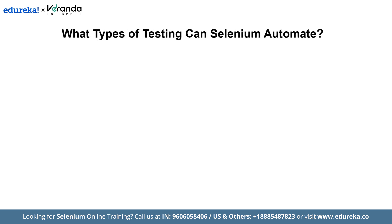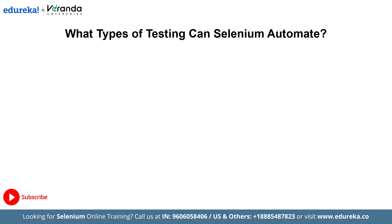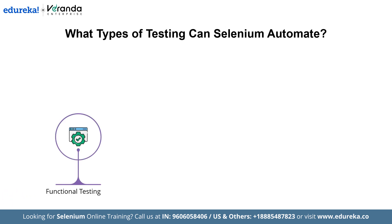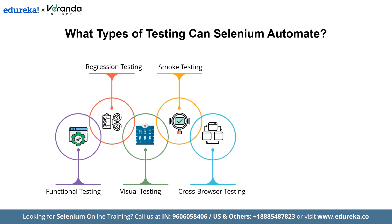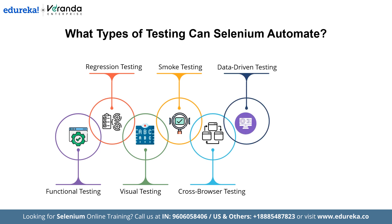Now, what types of testing can Selenium automate? First is functional testing — it ensures web applications work as expected by automating user interactions like clicks, form submissions and navigation. Next is regression testing, which re-runs tests to verify that new updates don't break existing functionalities. Then there is visual testing, which compares UI changes against a baseline to detect unintended visual deviations. Smoke testing runs quick tests to check basic functionality after new updates. And cross-browser testing ensures website consistency across different browsers and versions. Data-driven testing uses varied input data to validate website behavior under different scenarios.